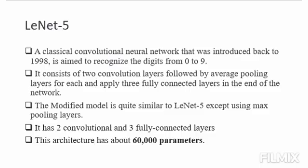LeNet-5 is a classical convolutional neural network that was introduced back in 1998 and is aimed to recognize the digits from 0 to 9. LeNet-5 is such a classical model that it consists of two convolutional layers followed by an average pooling layer for each, and applies three fully connected layers at the end of the network.